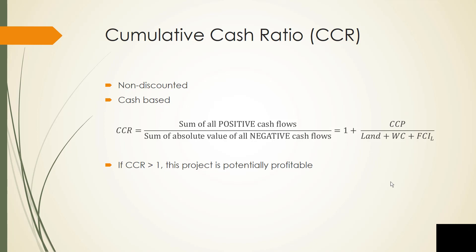So we frequently use the cumulative cash ratio for cash-based analysis instead. This is the sum of all positive cash flows divided by the sum of the absolute value of all negative cash flows. Working through the math, it simplifies to one plus the cumulative cash position, divided by the cost of the land, working capital, and fixed capital investment without the land. Whenever this value is greater than one, the project is potentially profitable; if it's less than one, the project is potentially not profitable.